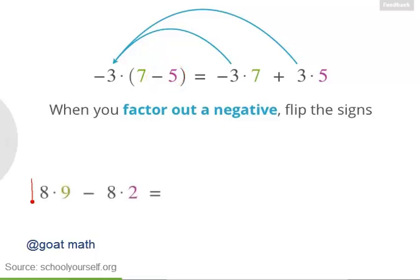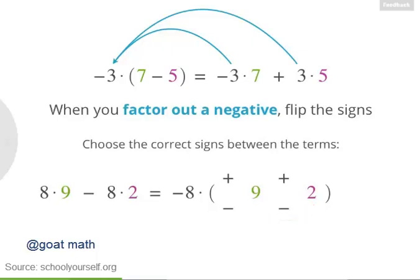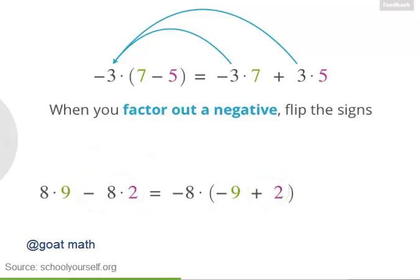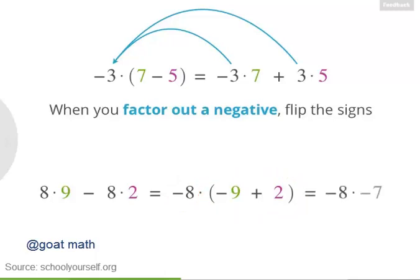So if distribution takes you from this expression to this one, then factoring out takes you from this expression back. Just as distributing a negative means you flip the signs, factoring out a negative also means you flip the signs. You have negative 3 times 7, so after factoring out the negative number, you get positive 7 inside the parentheses. And over here you have plus 3 times 5, so factoring out gives you minus 5. Try another example: 8 times 9 minus 8 times 2. If you factor out negative 8, then inside the parentheses you'll have terms with 9 and 2 — choose the correct signs. We have positive 8 times 9; factoring out a negative 8, we flip the sign, giving us negative 9 inside the parentheses. And we have minus 8 times 2, so we have plus 2 inside the parentheses. So we have negative 8 times (negative 9 plus 2), which equals negative 8 times negative 7.